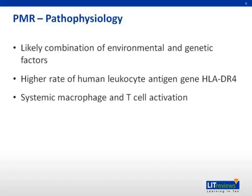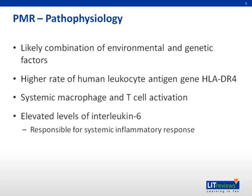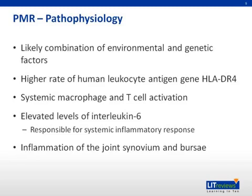At the cellular level, patients display systemic macrophage and T cell activation with cytokine production. The production of cytokines, in particular interleukin-6, appears to closely correlate with the severity and expression of systemic symptoms. The involvement of IL-6 is also suggested by the response to glucocorticoid therapy. The administration of glucocorticoids is associated with both a decrease in serum levels of IL-6 and a rapid improvement in symptoms. At the tissue level, the cellular and cytokine activation leads to inflammation of the joint synovium and bursa.